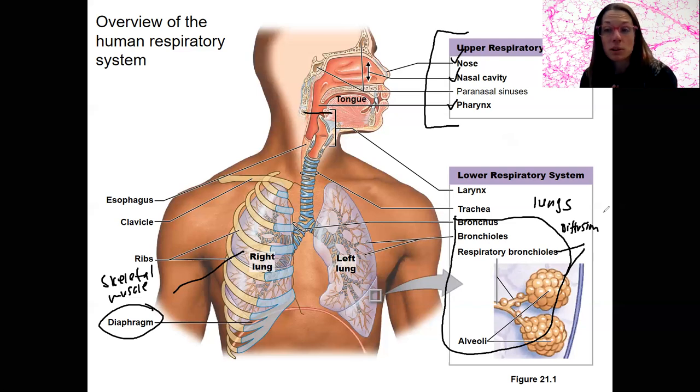Functions of the respiratory system. Main one is exchanging gases with our environment, with the atmosphere, obtaining oxygen, and getting rid of carbon dioxide. There are two secondary functions I want to mention. One is speech. So this involves the passage of air out of the body. Coming from the lungs, that air comes out. And the larynx is going to be also important for actually how we form words.